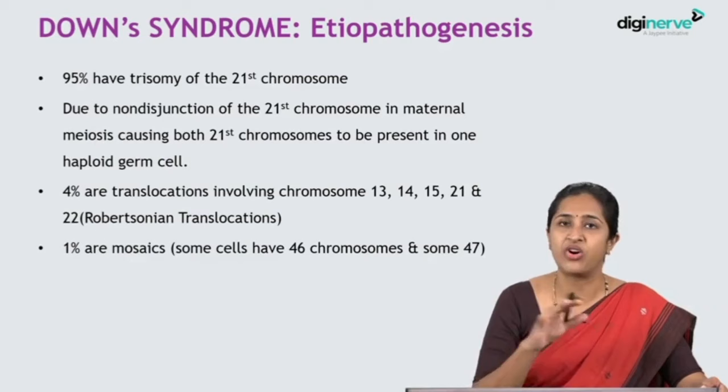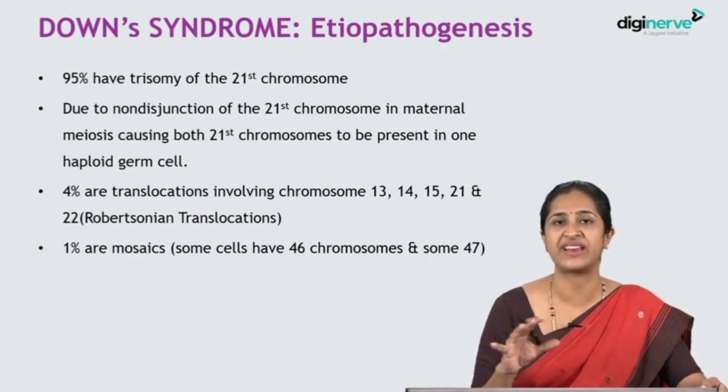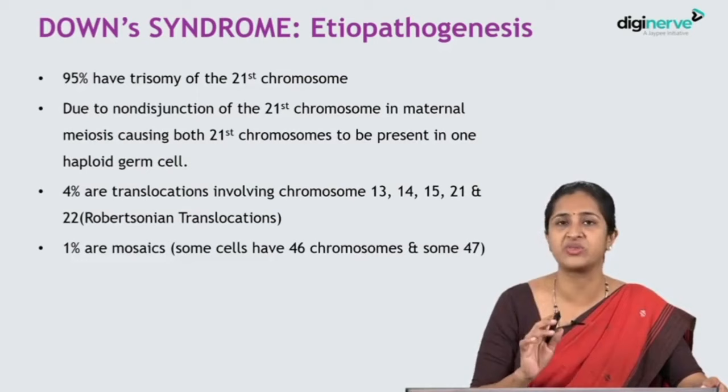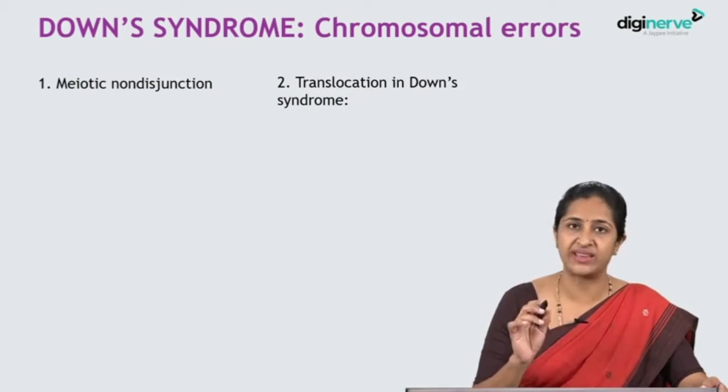One percent are mosaic Down syndrome. When we say mosaic Down syndrome, it implies that all cells are not the same — just as the word mosaic means different, it is random. In mosaic Down syndrome, some cells have 47 chromosomes and some cells have 46 chromosomes. So 1% of Down syndrome can be mosaic Down syndrome.